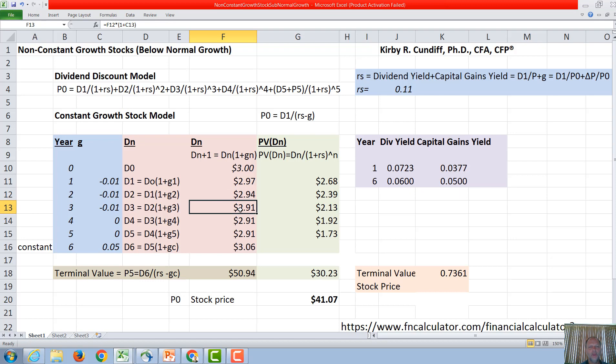And then D2 is going to be 2.97 times 1 plus a negative 0.01, or 0.99, or 2.94. And D3 again will be 2.94 times 0.99 equals 2.91. Then we have no growth for 2 years, so we stay at 2.91, and then we have a quick recovery and we start growing at 5%, so D6 is 2.91 times 1.05, or 3.06.